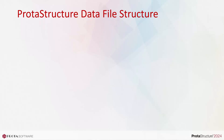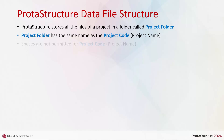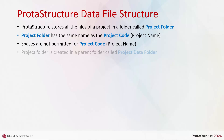Let's go through how Protostructure manages the model data and files. Protostructure stores all the files of a project in a folder called Project Folder. The Project Folder has the same name as the project code, which is the project name. Spaces are not permitted for the project code. The project folder is created in a parent folder called Project Data Folder.